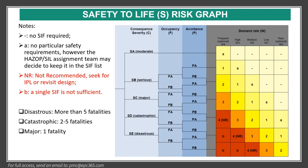This is a typical example of the safety-to-life risk graph. For safety, we have consequence categories. For example, if it is a disaster — more than five fatalities — occupancy defines how many people are present, such as whether it is a manned or unmanned platform. Avoidance relates to the possibility of escaping the incident. For demand rate, for example, if we have a control loop failure, that is W2, with an initiation event frequency of 1×10⁻¹.